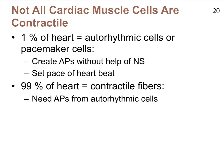They're called auto-rhythmic because all by themselves, without the help of the nervous system, they succeed in depolarizing — they have no help from the nervous system and can do this all on their own. They can therefore be called pacemaker cells because literally they set the pace at which depolarization occurs.